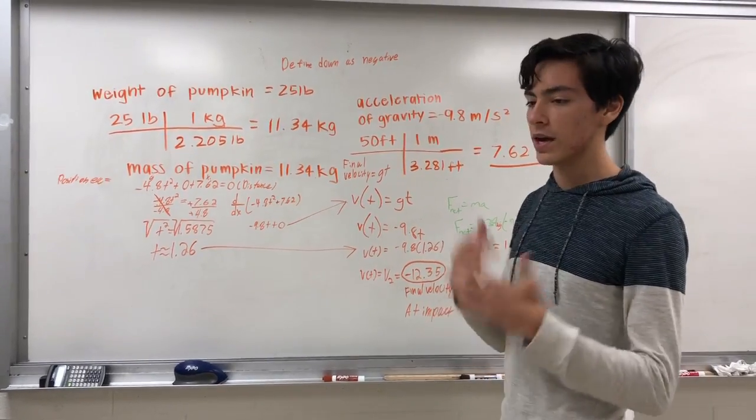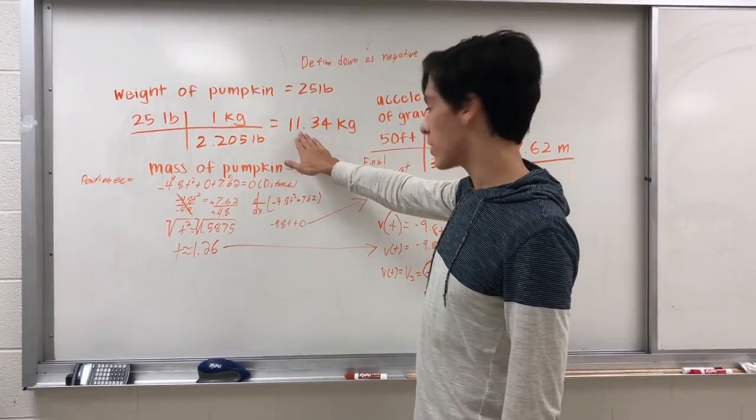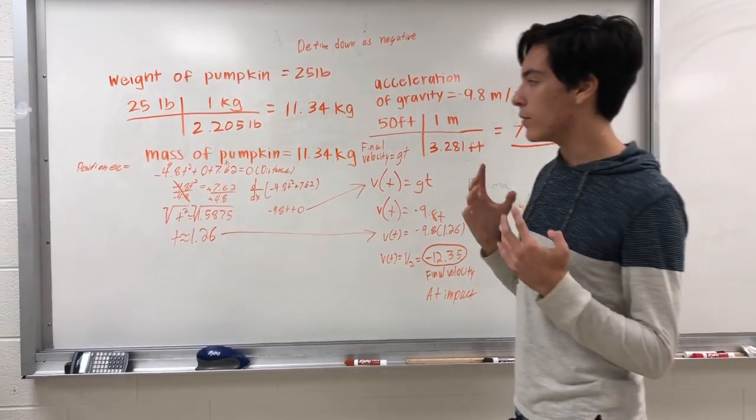We usually use the Scientific International units, so we have our conversions here from 25 pounds to 11.34 kilograms, and from 50 feet to 7.62 meters.